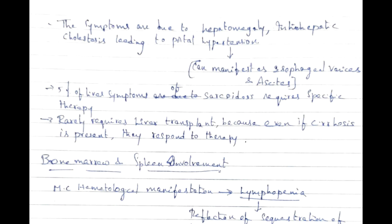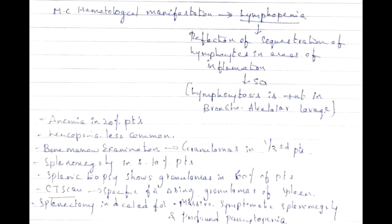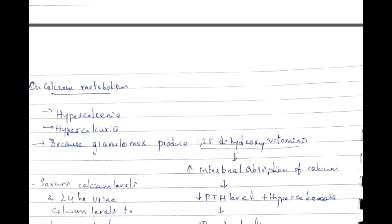The most common hematological manifestation is lymphopenia, reflecting sequestration of lymphocytes in areas of inflammation. Bronchoalveolar lavage (BAL) shows lymphocytosis, while blood shows lymphopenia. Anemia is present in 20% of patients; leukopenia is less common. Bone marrow shows granulomas in one-third of patients. Splenomegaly occurs in 5–10% of patients; splenic biopsy shows granulomas in 60%. Splenectomy is indicated for massive symptomatic splenomegaly and profound pancytopenia. Non-thoracic lymphadenopathy occurs in 20% of patients.